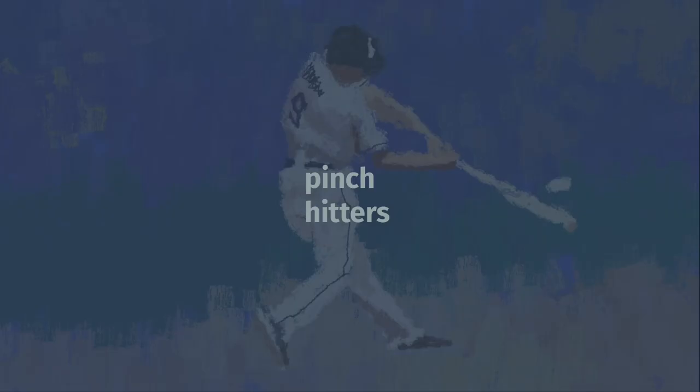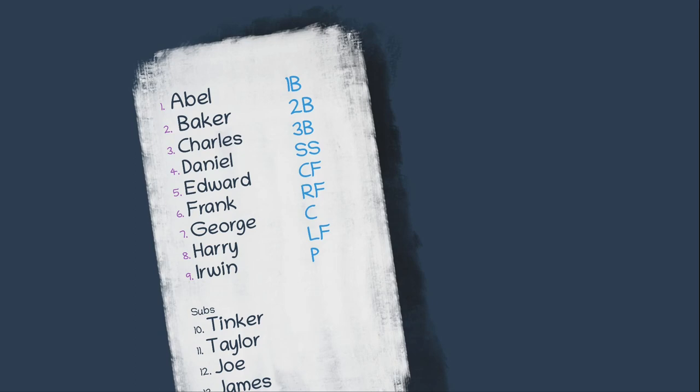So if it's Baker's turn in the lineup to bat, but he just came down with a case of leprosy, then the manager will go to the umpire and say, we are going to pinch hit Taylor for Baker, meaning that Baker is out of the game, and Taylor is now hitting in his spot in the batting order. Because he hasn't played on defense yet though, he's still just considered a pinch hitter.